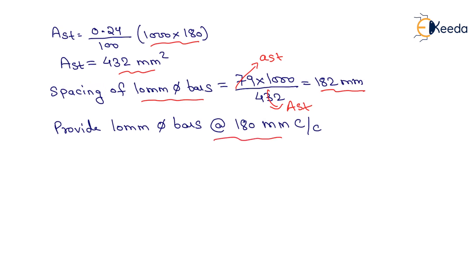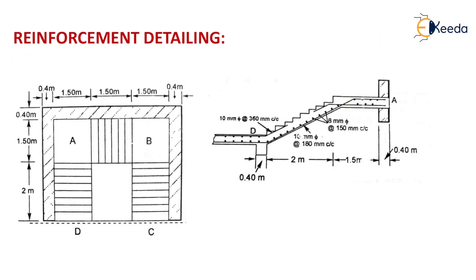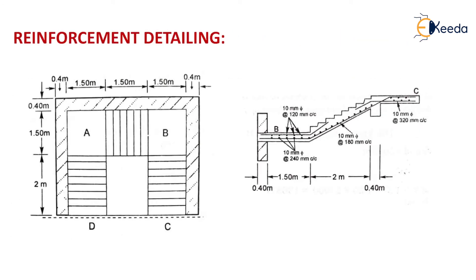Provide 10 mm diameter bars at 180 mm center to center. Moving to the next step: detailing of reinforcement. For flight AD, reinforcement detail is provided for the ultimate moment and marked. Similarly, reinforcement details are provided for flights AB and BC. Note: reinforcement details are the same for flights AD and BC. Thank you students — in the next class we will study design of retaining wall.